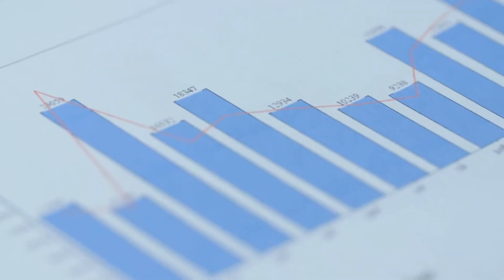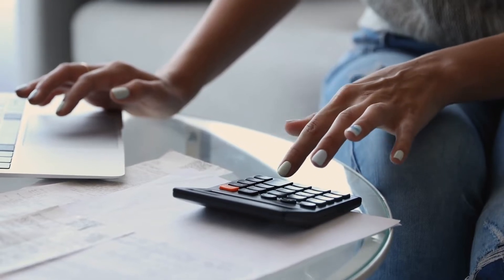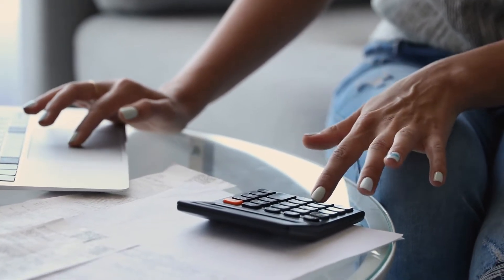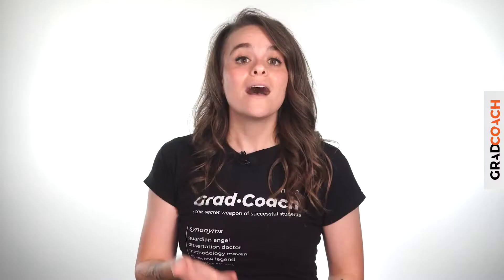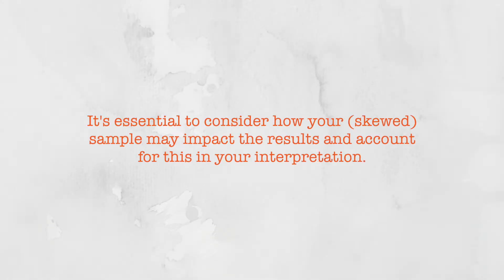Selection bias commonly occurs in quantitative research as the sampling strategy adopted can have a major impact on statistical results. That said, it also comes up in qualitative research as there is still plenty of room for skewed samples. It is important to pay close attention to the makeup of your sample and make sure you adopt a sampling strategy that aligns with your research aims. You will seldom achieve a perfect sample and that is okay, but you need to be aware of how your sample may be skewed and factor this into your thinking when you analyze the resultant data.